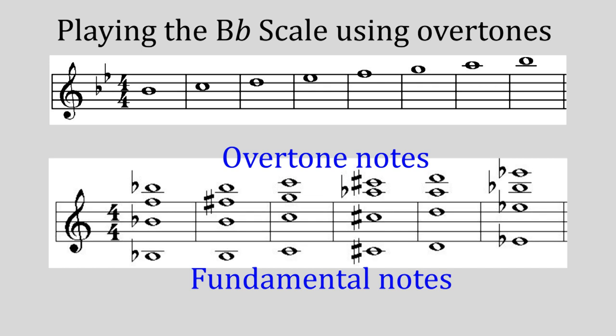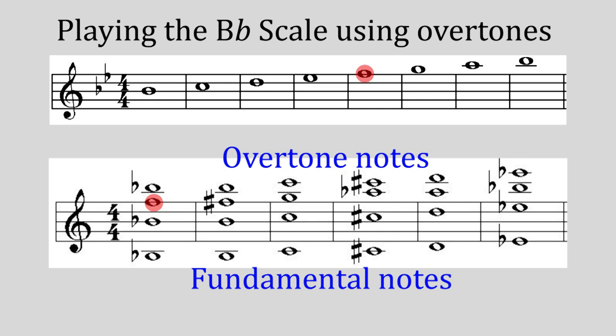A diatonic scale can be formed by using overtone notes. In this example we have a B flat major scale above and some of the notes of the harmonic series below, with the fundamental note right at the bottom. The idea is to finger the appropriate fundamental note and sound the equivalent overtone note to create the scale — always using the lowest fundamental note which has the equivalent scale note. For example: start with the B flat harmonic series and play the B flat overtone; then move to the C harmonic series and play the C overtone; then D harmonic series for the D overtone; then E flat harmonic series for the E flat overtone; back to B flat for the F overtone; C harmonic series for the G overtone; D harmonic series for the A overtone; and return to B flat harmonic series for the final B flat overtone.